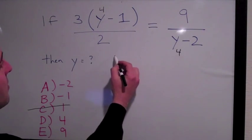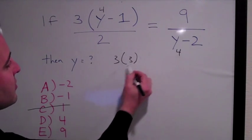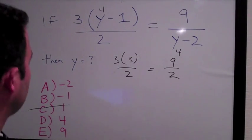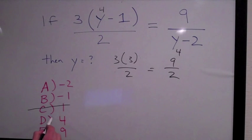So does 3 times 3 over 2 equal 9 over 2? Absolutely, it does. We have a perfect match. You go with answer choice D and you move on through the test.